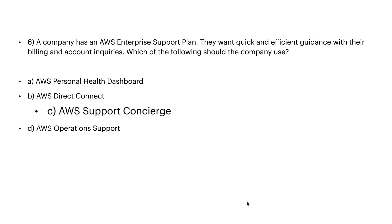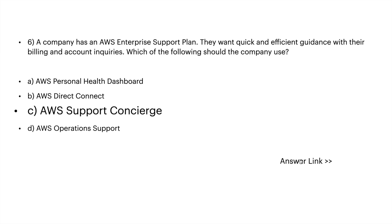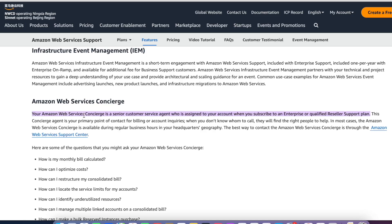The right answer is C: AWS Support Concierge. The AWS Personal Health Dashboard helps you learn about the availability and operations of AWS services, and AWS Direct Connect is a network service. The AWS website confirms: Amazon Web Services Concierge is a senior customer service agent assigned to your account when you subscribe to an Enterprise or qualified reseller support plan, and is your primary point of contact for billing or account inquiries.